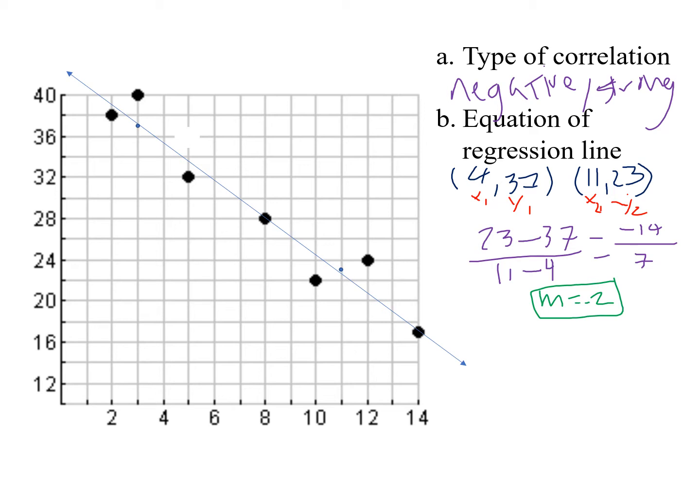Then I need to take my slope and one ordered pair and plug them back into y equals mx plus b to find that missing b value. I'll use the first ordered pair that I have written. I have 37 equals my slope of negative 2 times my x value of 4 plus my unknown piece. Equation solving skills tell me I need to multiply those two values, and I get negative 8 plus b equals 37. To get rid of that negative 8, I add it to both sides, and so I get a value of 45 for b.